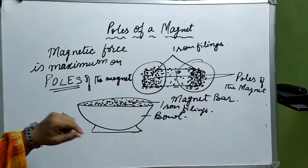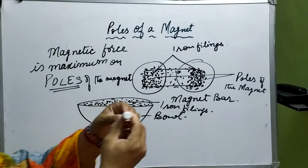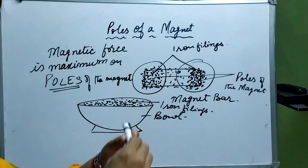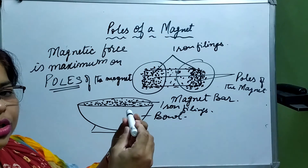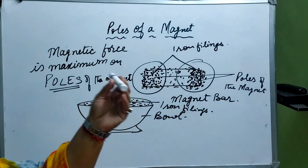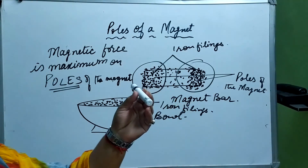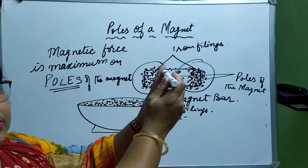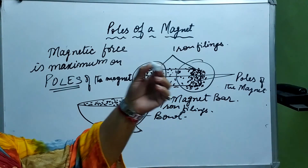Now let us see some more things about it. When we suspend a Magnet — suppose this is a Magnet and I am suspending it with the help of a thread or string — it is suspended freely and will keep moving for some time. After some time it is going to align itself and become stable. It is going to align itself in the North-South direction of the Earth. The end pointing towards the North is known as North Pole, and the one pointing towards the South is called South Pole.